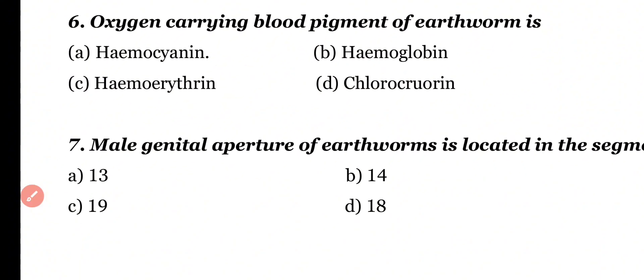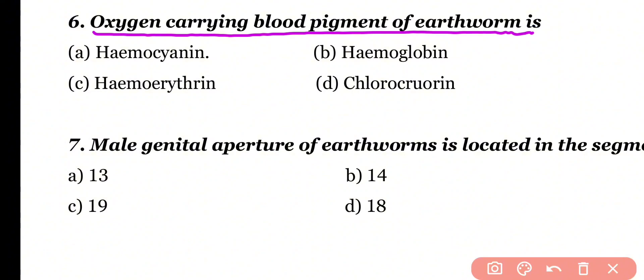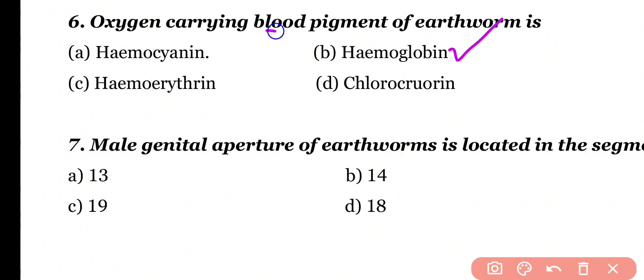Question number 6. Oxygen-carrying blood pigment of earthworm is: hemocyanin, hemoglobin, hemerythrin, or chlorocruorin. Correct answer is option B. The oxygen-carrying pigment of earthworm is hemoglobin, which is dissolved in the blood plasma.